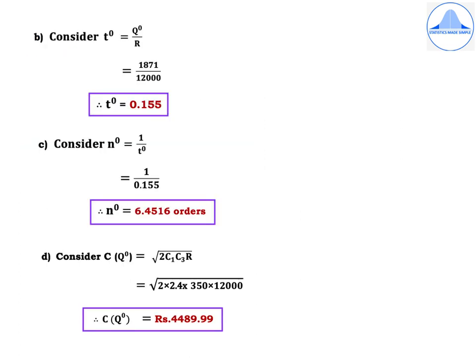The reorder time: T⁰ = Q⁰ / R = 1871 / 12,000 = 0.155 years. The frequency of replenishment: N⁰ = 1 / T⁰ = 1 / 0.155 = 6.4516 orders.